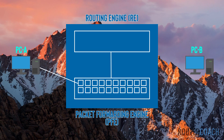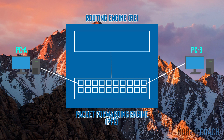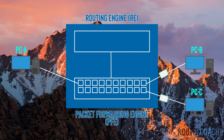Transit traffic is any traffic that comes into the device on one interface and goes out the device on another interface. For example, if PC-A wants to communicate with PC-B on the other side, the traffic from PC-A comes into one interface, transits the device, and exits out the other interface towards PC-B. It can be unicast or multicast traffic — unicast comes in one interface and goes out one interface, while multicast comes in one interface and can go out multiple interfaces. Because the PFE has a copy of the forwarding table, it doesn't need to consult the routing engine. In an exam, transit traffic is processed by the packet forwarding engine.